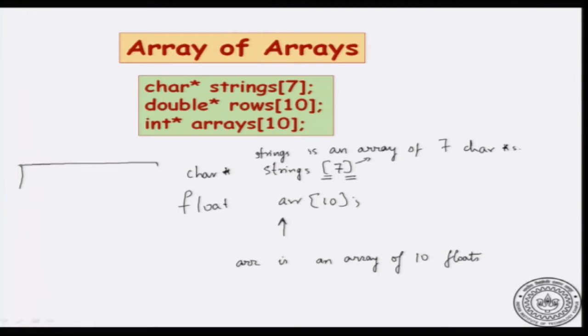Pictorially, you can think of it like this: you have 7 cells in strings and each entry is a character star, each entry is a character pointer. You can think of it as a string, you can think of it as a character array. So here is the pictorial representation. Let us look at why we would need such a structure and what is the advantage of it. This is a very popular structure, almost as popular as two dimensional arrays themselves.